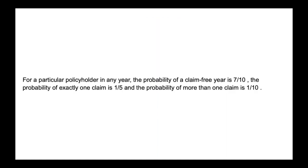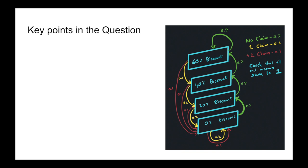Speaking of probabilities, this is now the next thing that we read in the question. It says for a particular policyholder in any year, the probability of a claim free year is seven divided by 10. So that means no claim. The probability of exactly one claim is one divided by five. And the probability of more than one claim is one divided by 10. So once again, we've got our little graph over here. And how we basically put all these numbers together was we had our probabilities of no claim being the seven divided by 10.